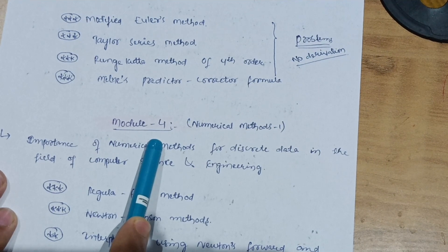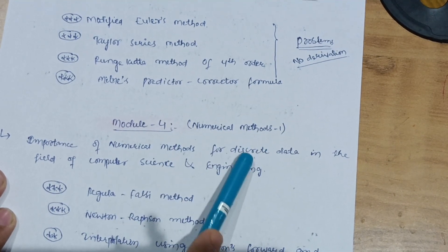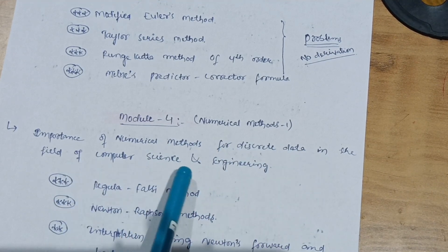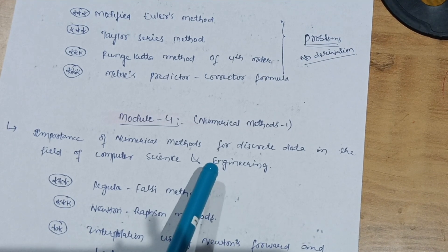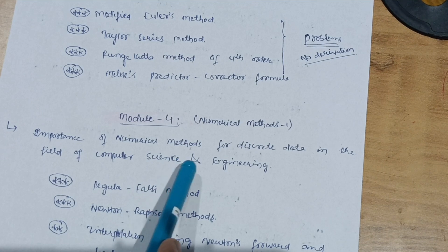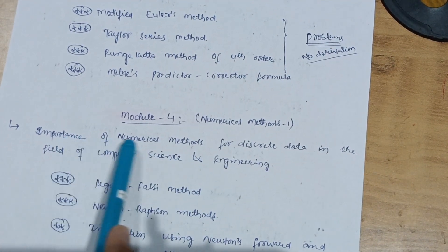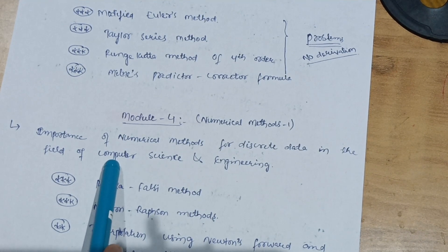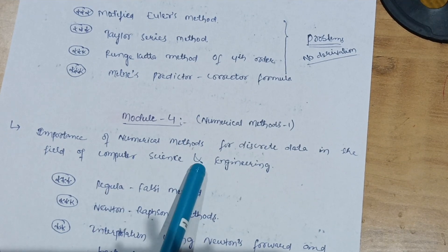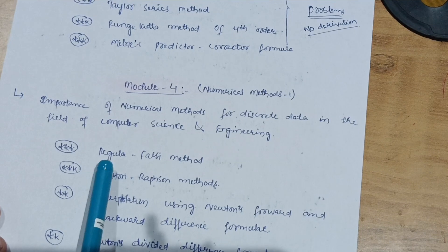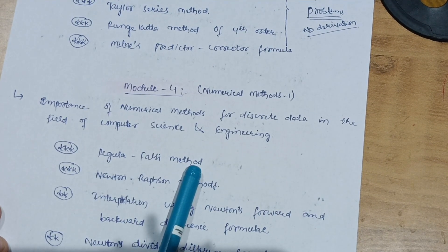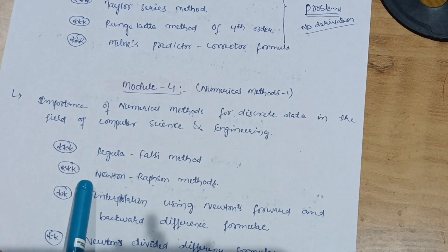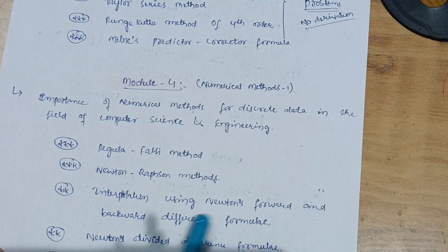Next is Module 4 — this is also a simpler one, where you can also easily score 20 marks. This is 'Numerical Methods 1' — importance of numerical methods for discrete data in the field of computer science and engineering. VTU has changed the pattern this time, adding CS applications. In this module, you have to cover Regula Falsi Method — it is formula-based, you just write down the formula and put in the values, no rocket science. Then Newton-Raphson Method as well.